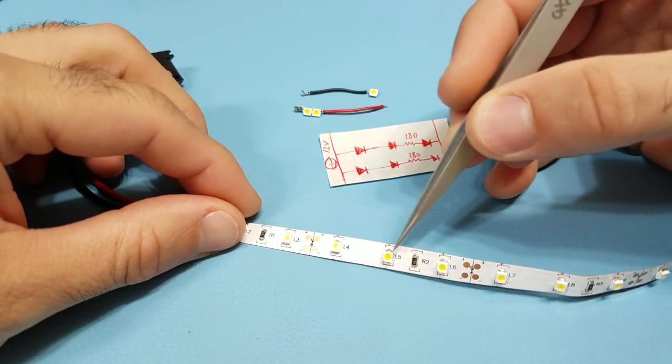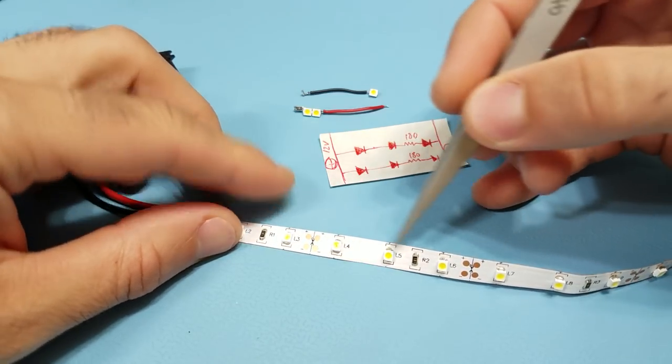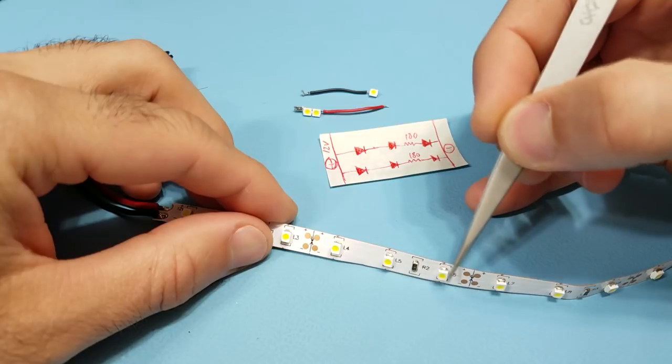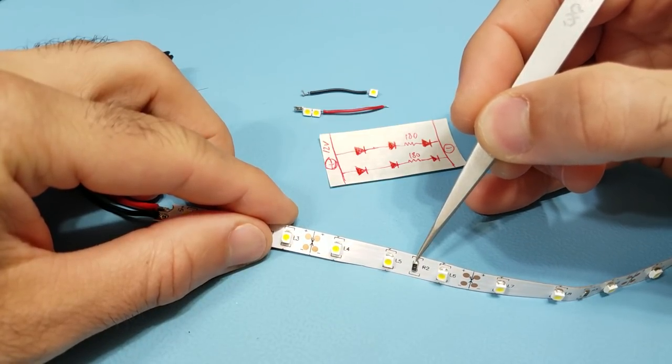These are bright white LEDs in a 3528 SMD package and on these strips they come in sets of three along with the 180 or 150 ohm resistor.